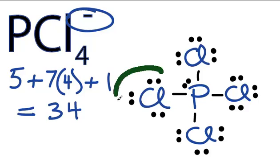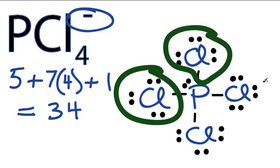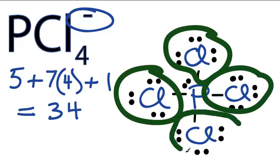So at this point, all of the chlorines have 8 valence electrons, and we're counting that there. These lines count as 2. So each one has 2, 4, 6, 8. So they have octets.